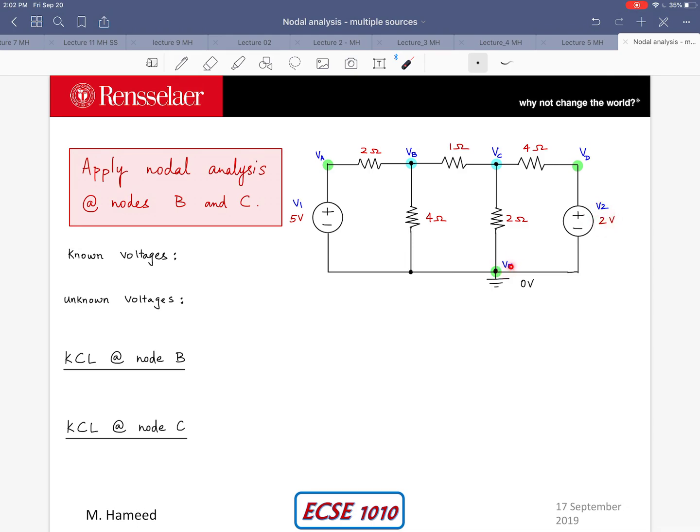VE is our reference node in this example and we are using 0 volts for the reference node. VB and VC are our two nodal voltages that are unknown in this example. All the resistor elements are known and we are using values of 2 ohms, 1 ohm, 4 ohms and so on.